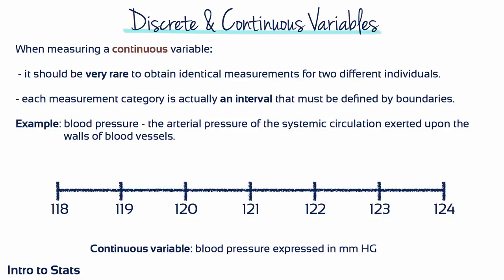It's rare for continuous variables to be identical for two different individuals. Each measurement category is really an interval defined by boundaries. If we measure blood pressure to four decimal places, we'll observe that every person is different. Those values fall on a continuous line that can be divided into specific categories defined by boundaries — 118, 119, 120, 121, and so on.